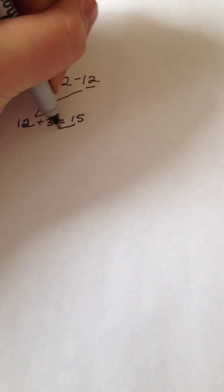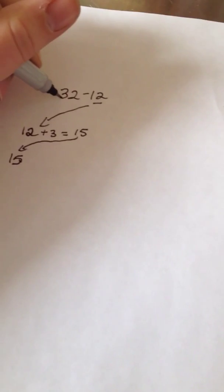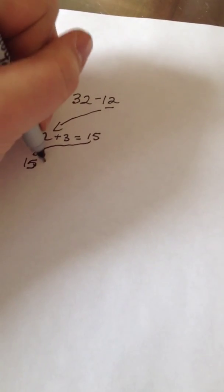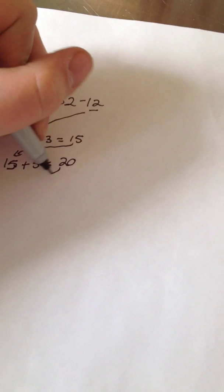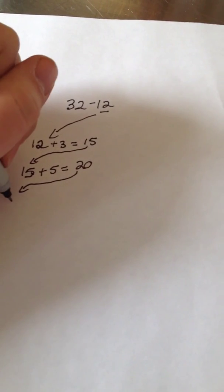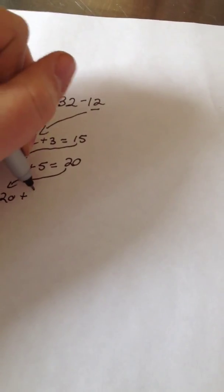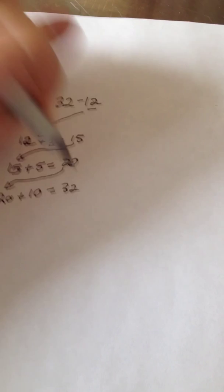So they're at the 15 now and then they say okay I'm at 15 I want to get close to 32 so what can I add to get me close to 32? They say 5 and that makes a 20. So now they're at 20 and they think what can I add to get to close to 32? So they chose a 10. Now they're at 30.